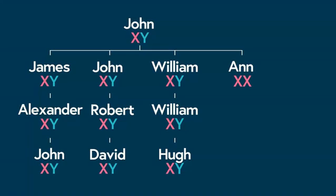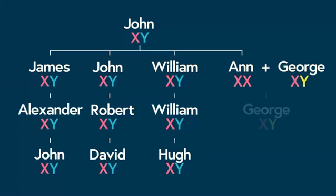Finally, going back to John Senior's daughter Anne, we see that she married George. He carries a completely different Y chromosome to Anne's brothers, and it is this Y chromosome which is inherited by his son.